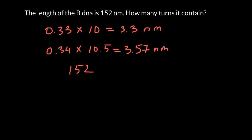Our minimum would be 152 nanometers, the length of our DNA, divided by 3.3 nanometers. Another variant would be 152 divided by 3.57 nanometers per one single turn. The minimum number that we can get would be 46.06, so we can round it to 46 full turns.